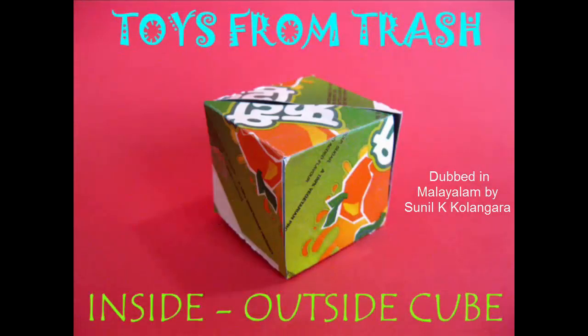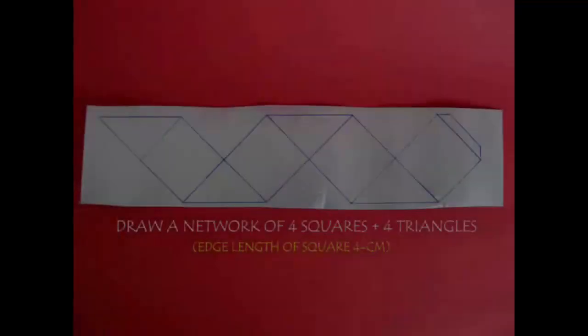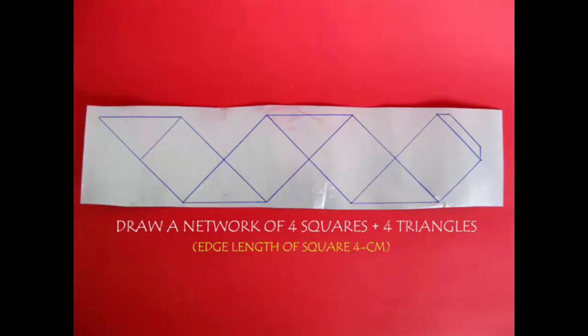This is the inside-outside cube. It's magic. Materials: old Tetra Pak, needle, scale.